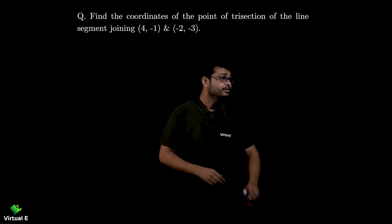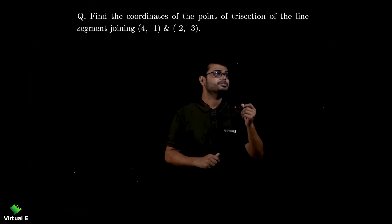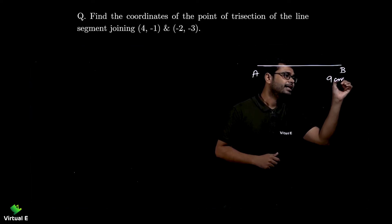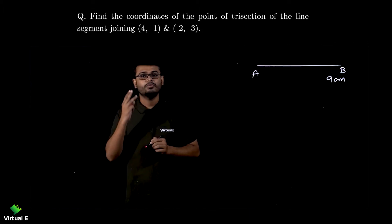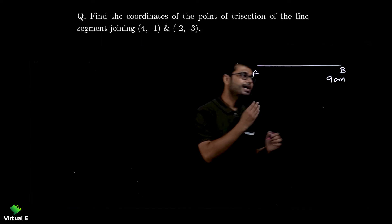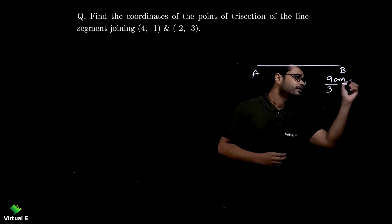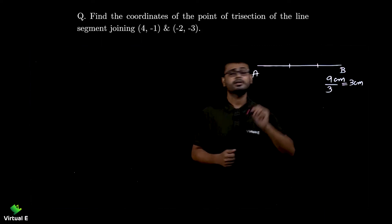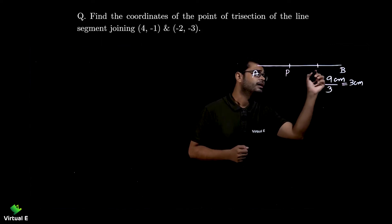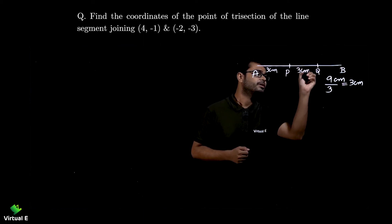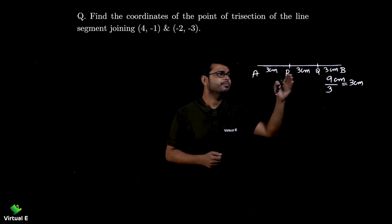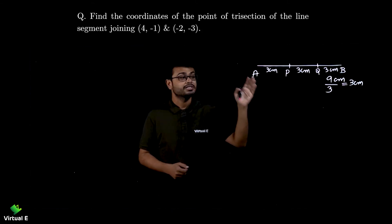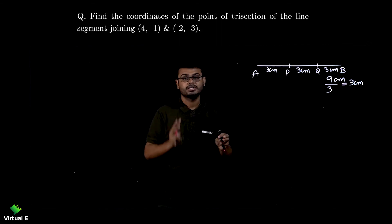Let me take a number line — rather than going to two dimensions, let's start with one dimension. I'm taking a number line with points A and B, and let's say the length is 9 centimeters and I want to divide it into three equal parts. So I divide by 3, giving 3 centimeters each. After 3 centimeters I get one point, and after another 3 centimeters another point — let's name them P and Q. So three centimeters, three centimeters, and three centimeters add up to nine centimeters.